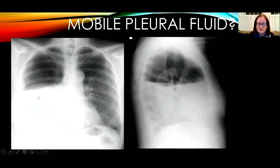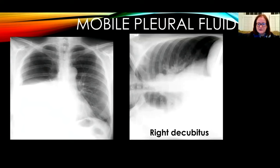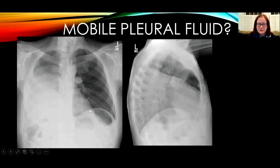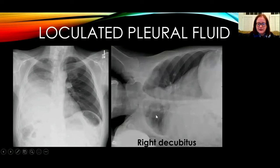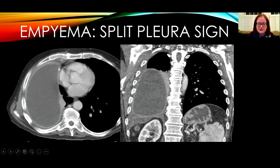This patient has a large right pleural effusion on frontal and lateral views, and on the lateral decubitus view with the right side down, there is free layering indicating it's not loculated. Another patient with a large right pleural effusion shows no change in configuration on decubitus positioning, indicating it is loculated or localized and prevented from moving freely. This patient has thickened visceral and parietal pleura — the split pleural sign in empyema.